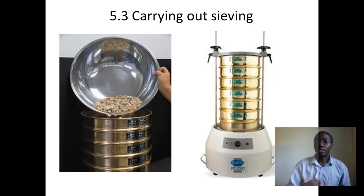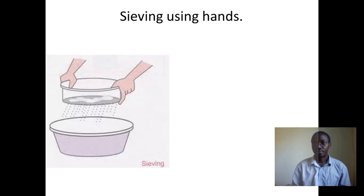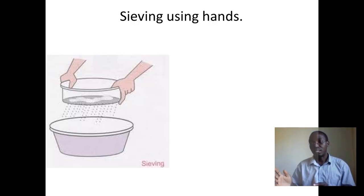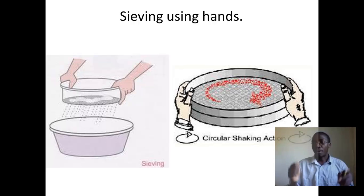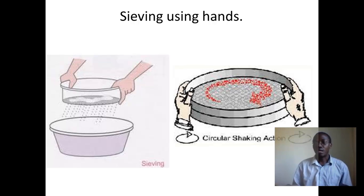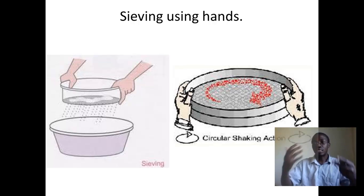After the shaking process is done, the sand particles retained on each sieve are collected and weighed. If sieving is done by hand, the representative sand sample is placed on the sieve with the largest apertures, say sieve 10 mm, and shaken in a circular motion. The sand particles retained on that sieve are collected and weighed, while those that pass through are transferred to the next sieve, say sieve 6.3 mm. The process is repeated until all sieves are done.